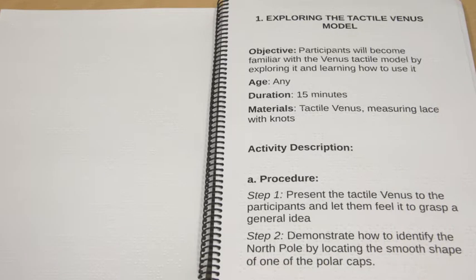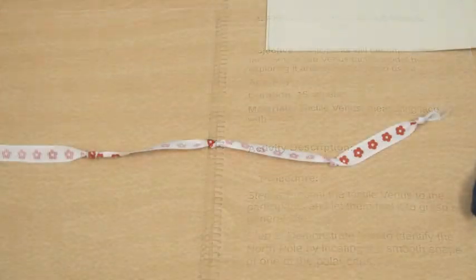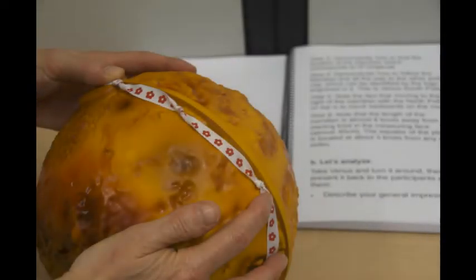The first activity is about becoming familiar with the model and learning how to use it by demonstrating the positions of the poles and the meridian and how to measure with the measuring lace. For example, the equator of the planet is located at about two knots away from the poles. The poles are four knots away from each other.